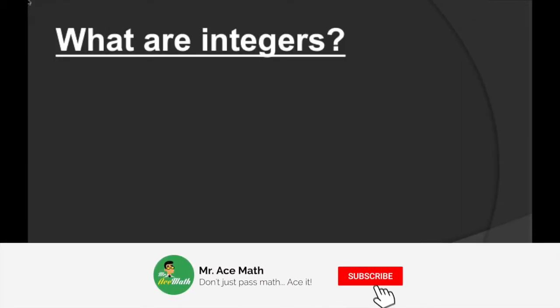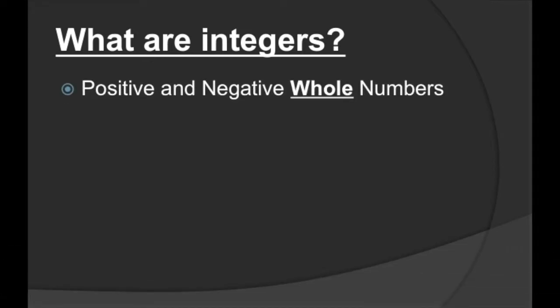So first of all, what are integers? Integers are positive and negative whole numbers as well as zero. It's really important to stress the fact that we're talking about whole numbers whenever we're talking about integers. Negative three and a half is not an integer even though it has a negative sign. Positive seven is an integer. As long as it's whole and positive, negative, or zero, it is an integer.